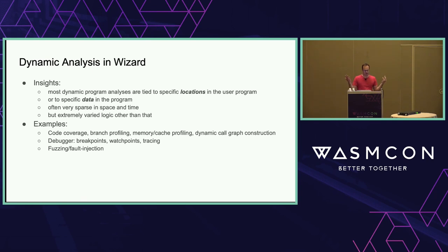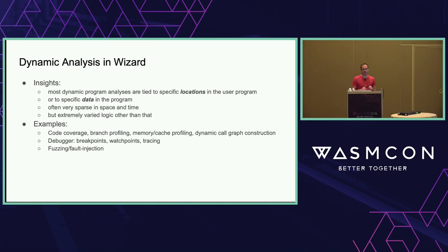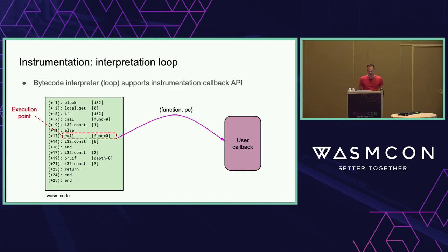Examples of analyses you'd want: code coverage — which functions, basic blocks, and instructions have executed; branch profiling — how often does a branch go each way, does the program spend a lot of time in a particular loop; memory usage and cache utilization; the call graph. If you're building a debugger, you want breakpoints and the ability to watch specific memory locations for updates. And tracing. Ultimately this all boils down to needing a programmable mechanism for instrumentation.